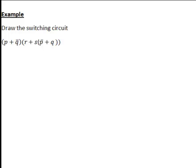So let's try one more which is a bit more complicated. In this one, P plus Q bar, and then we have R plus S brackets P bar plus Q. So again, let's look at this step by step. The P plus Q bar part is then connected in series with this next bit, R plus S P bar plus Q. So therefore, let's look at each of these blocks in turn.